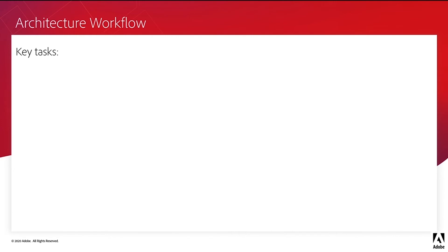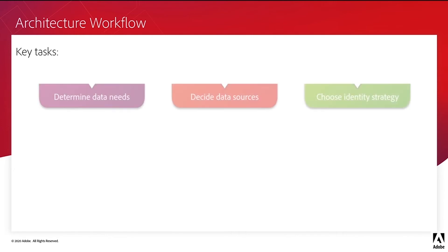From the data architecture standpoint, there are three primary tasks that need to be performed in CJA: determine data needs, decide data sources, and choose identity strategy. Because CJA data is pulled from AEP, these tasks are mostly executed in AEP.